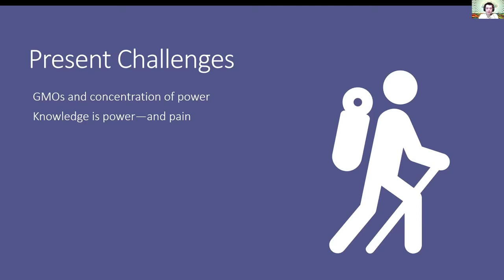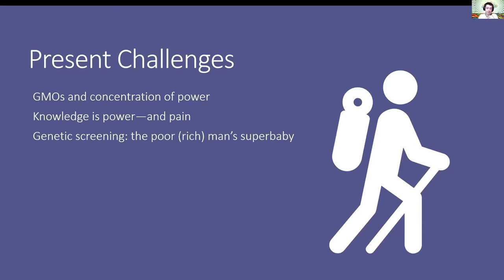This is a pretty straightforward but surprising example of just because you can doesn't mean you should. Information is not always helpful or appreciated. Genetic screening is the poor man's super baby, but actually only available to rich people. You can get a very large number of genetic possibilities, pick the desirable ones, and exclude potential persons from existing intentionally instead of accidentally.